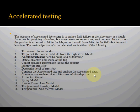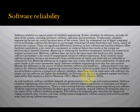Common ways to determine a life-stress analysis include the Arrhenius model, the Eyring model, the inverse power law model, the temperature-humidity model, and the temperature non-thermal model. Software reliability engineering is somewhat different because it's relatively new — we're examining how application software behaves within its operating system and how the operating system behaves with the hardware.